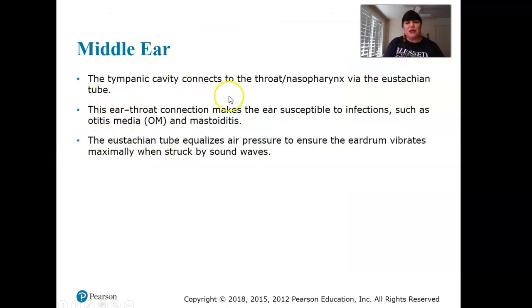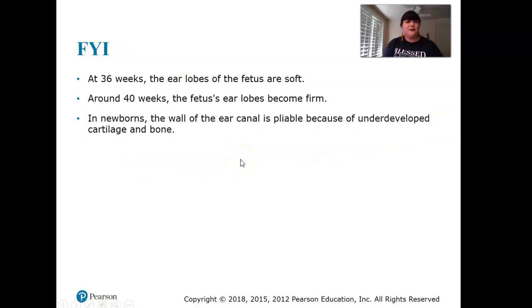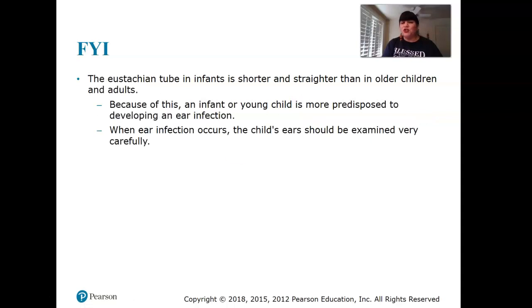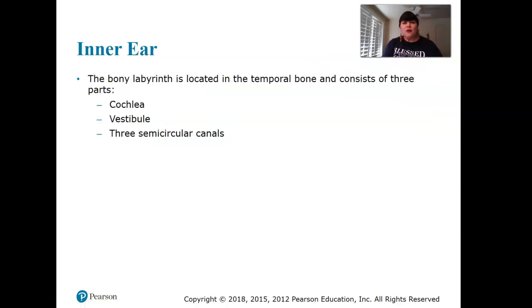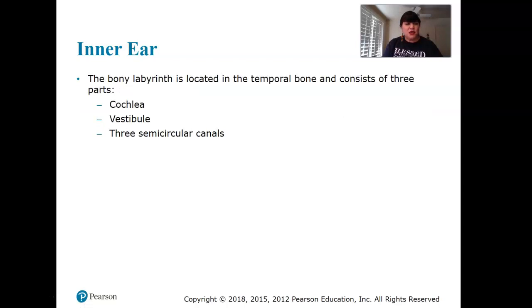The ear-throat connection makes the ear susceptible to infections such as otitis media and mastoiditis. The Eustachian tube equalizes air pressure to ensure the eardrum vibrates maximally when struck by sound waves. The Eustachian tube is shorter and straighter in children, which predisposes them to ear infections.